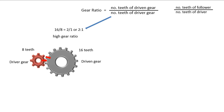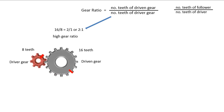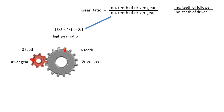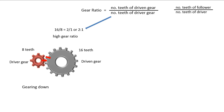Now let's observe the motion of these meshed gears. The red marks are the starting points. As the larger gear turns once, count how many turns the smaller gear makes. You saw that the smaller gear made two revolutions to the larger gear's one revolution. The larger gear took longer for one revolution, so we say its speed was less. Whenever the driven gear is larger than the driver, this will be true. The gear ratio 2 to 1 tells us that two turns of the driver will produce one turn of the driven. This situation is known as gearing down — the down refers not to the size of the gear, but to the speed. So gearing down always produces less speed. On the other hand, it produces more force, and this will be dealt with later.